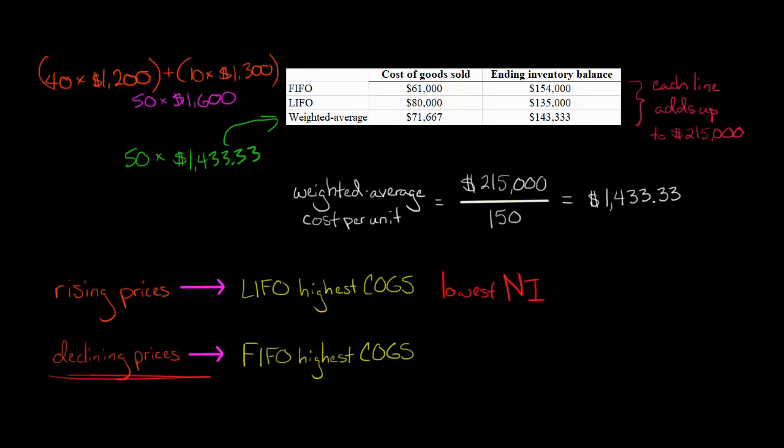FIFO, if we have declining prices, so if prices are going down, then FIFO would result in the highest cost of goods sold. Think about it conceptually. If prices are going up and we're pulling from the most recent purchases first, we're going to have the highest prices going through cost of goods sold first. And remember, weighted average cost is always going to be in the middle in terms of the cost of goods sold.